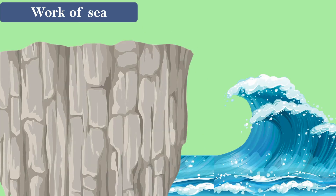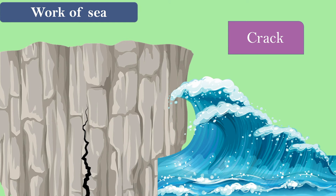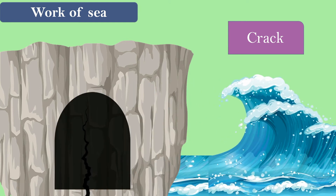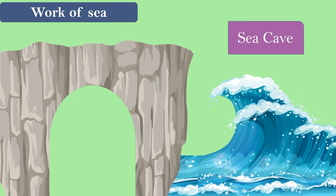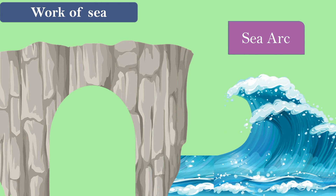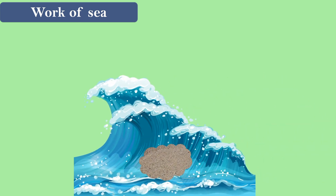Now let's understand the work of the sea in the formation of landforms. When a sea wave hits a cliff or a rock, it creates a crack. This crack grows because of continuous hitting and turns into a sea cave, which has a back wall and a roof. As the process continues, the back wall gets eroded away forming a sea arch, wherein only the side walls and the roof are left. As this continues, the roof is also eroded away, forming stacks — simply the leftover part of the eroded cliff.